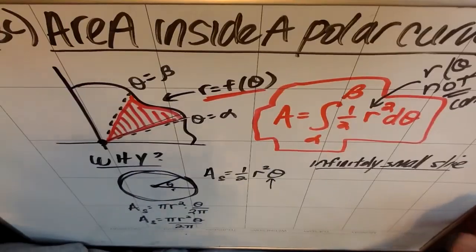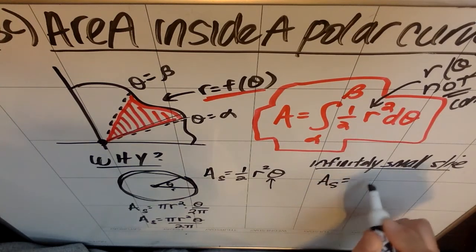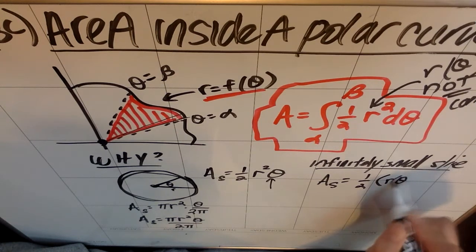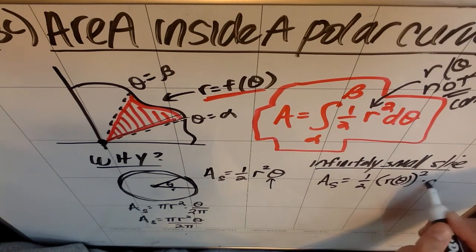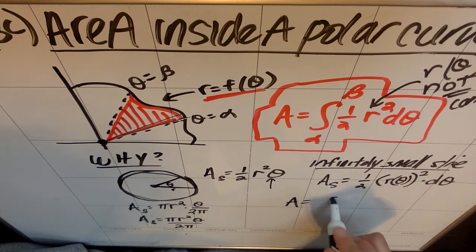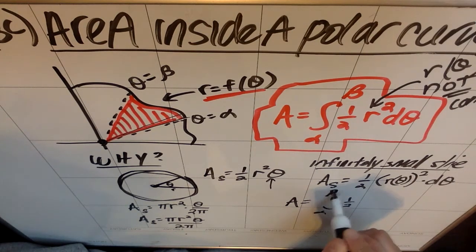What I want to point out here is that really what's happening is the area of one sector is one half of whatever that radius with respect to theta happens to be right now squared times the tiny, tiny angle, which is d theta. This means that the area of the whole shape should be the sum of all those sectors, the sum of the first sector which started at alpha to the last sector which went to beta.